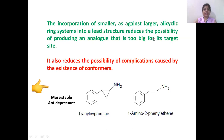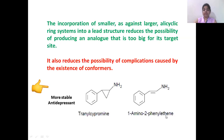If we incorporate smaller alicyclic ring systems into a lead structure, it reduces the possibility of producing an analogue that is too big for its target site, and also reduces complications caused by the existence of conformers. For example, tranylcypromine is an antidepressant and 1-amino-2-phenyl-ethene is a related compound. The key structural difference is that instead of a double bond with the amino group and benzylidene, a cyclic structure is incorporated. Tranylcypromine is more stable and possesses antidepressant properties, while 1-amino-2-phenyl-ethene is more prone to metabolic oxidation due to the double bond, making it quite unstable.